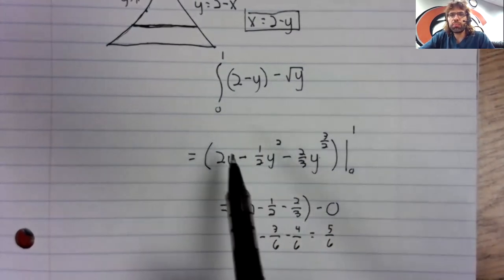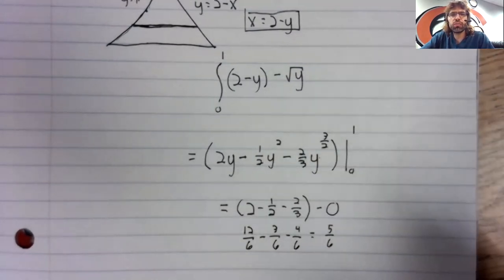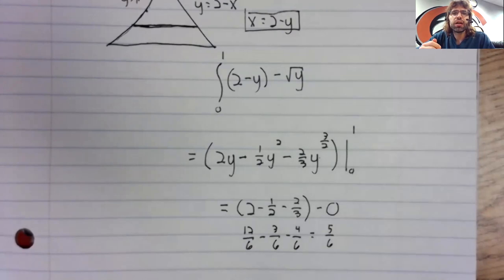And we take this integral. Nothing complicated here, I hope. We plug in one, we plug in zero, we subtract. If I've done my arithmetic correctly, we get five sixths.